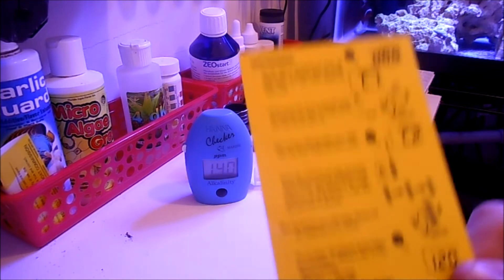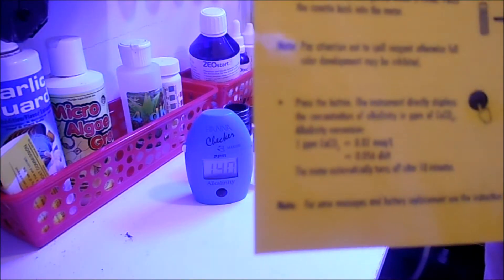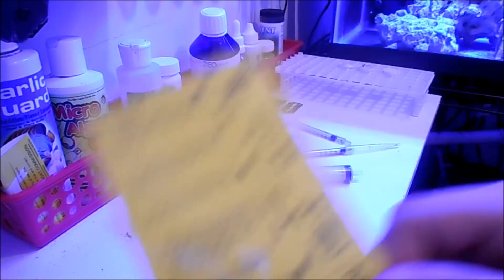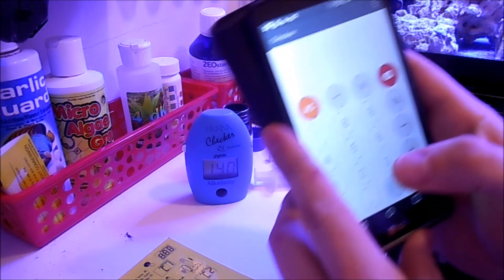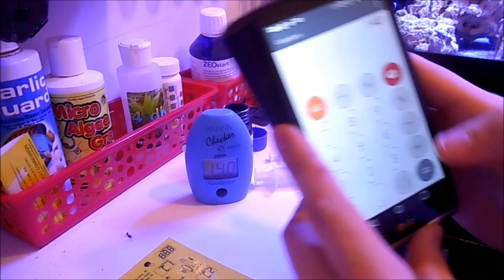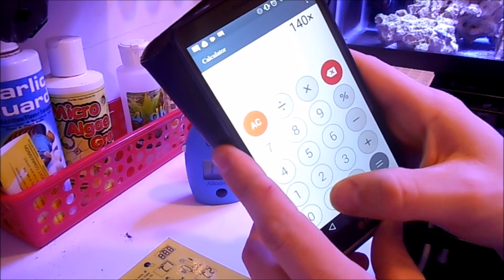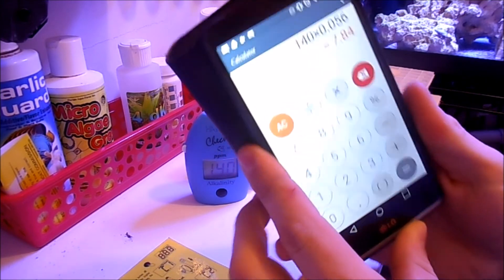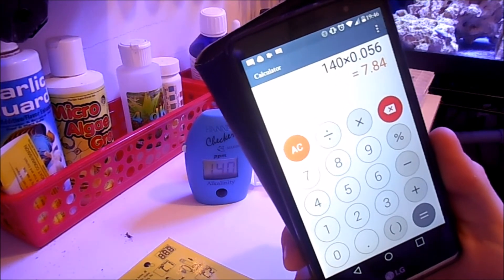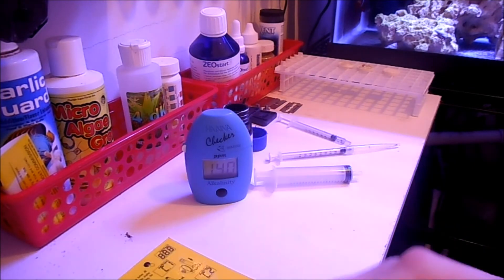Get your calculator out. We're going to take 140 and we're going to times that by 0.056. That'll give us a dKH of 7.84.